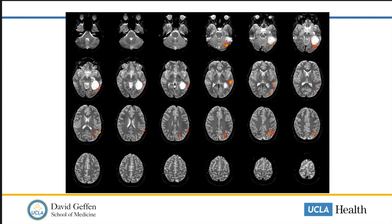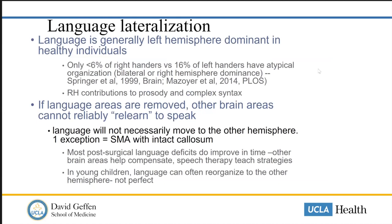One downside to fMRI is that it shows all areas of the brain activated by a task and doesn't determine the effect of a lesion in a particular area — telling us all potential regions rather than the critical part, though still valuable. In the majority of people, language is lateralized to the left hemisphere, and knowing where these active cortical areas are relative to the tumor helps guide trajectory into a lesion for resection.